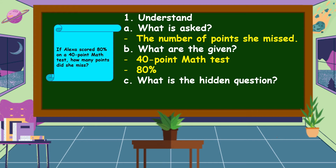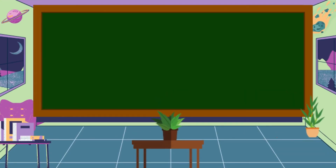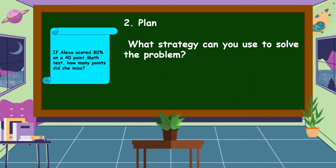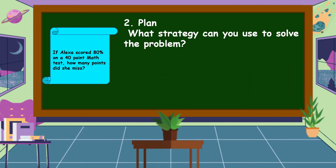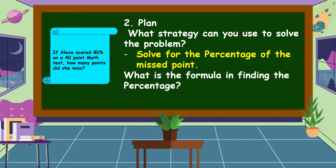What is the hidden question? The hidden question in this problem is: what is the percent of the missed points? We understand already the problem. Next, we're going to make a plan. In this problem, we're going to solve for the percentage of the missed points. The formula in finding the percentage is: percentage is equal to rate times base.